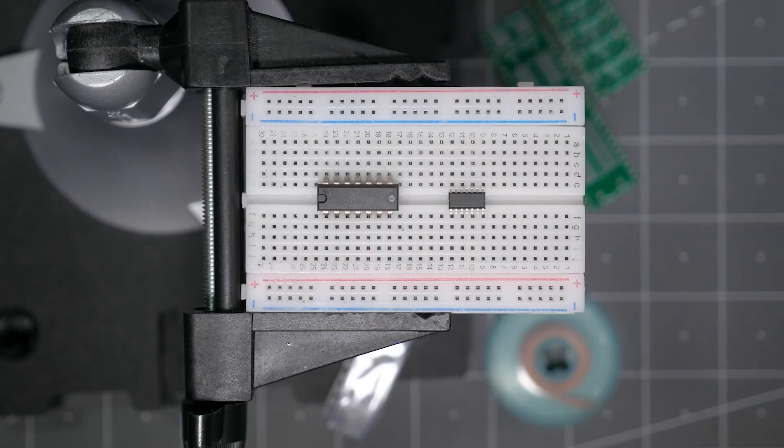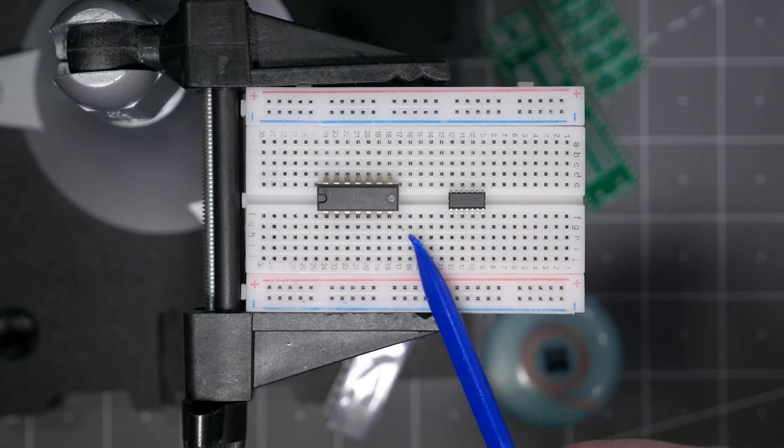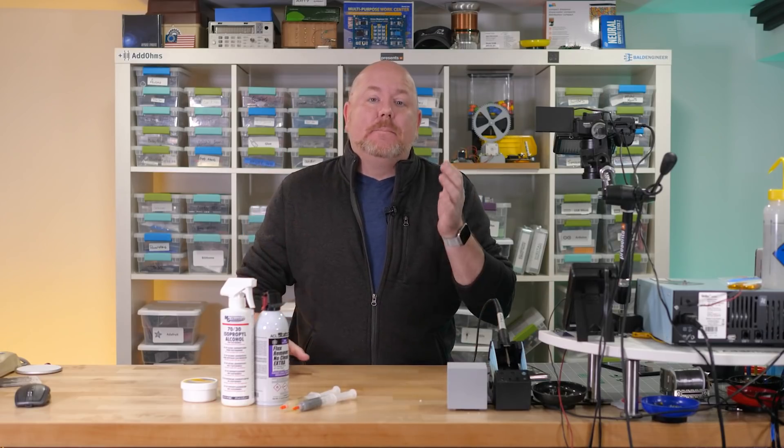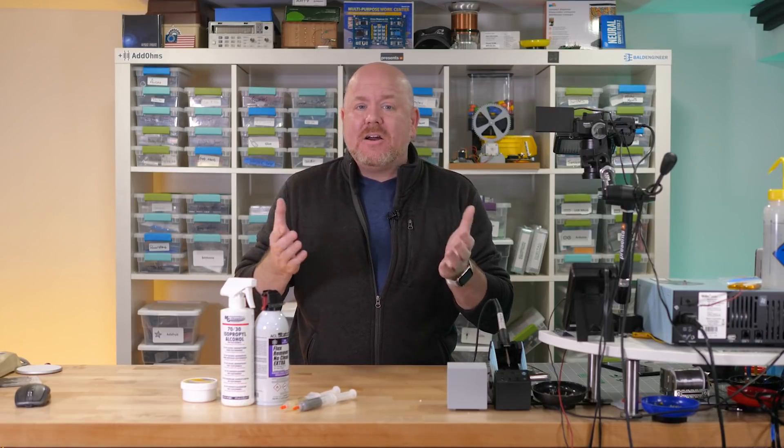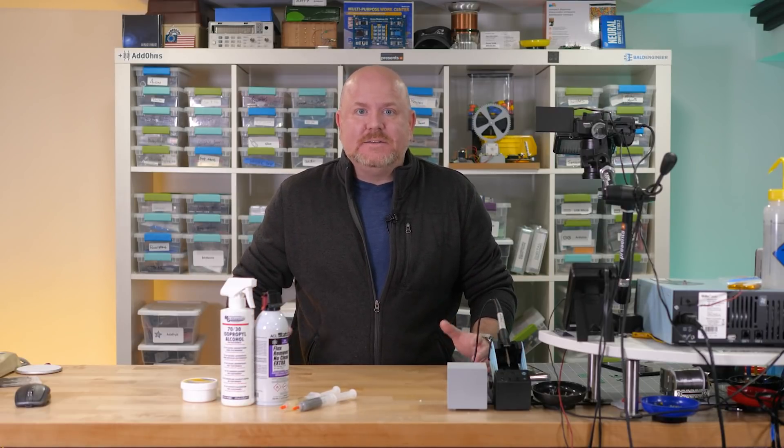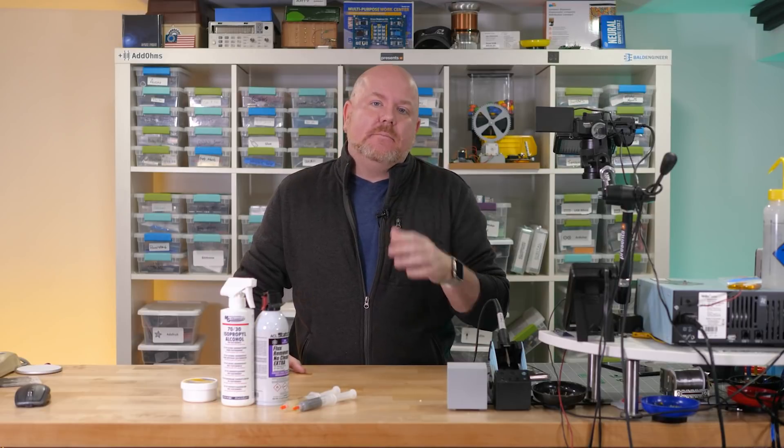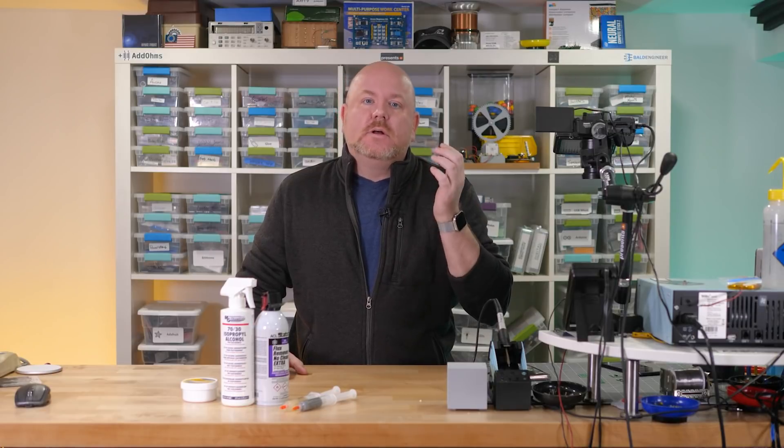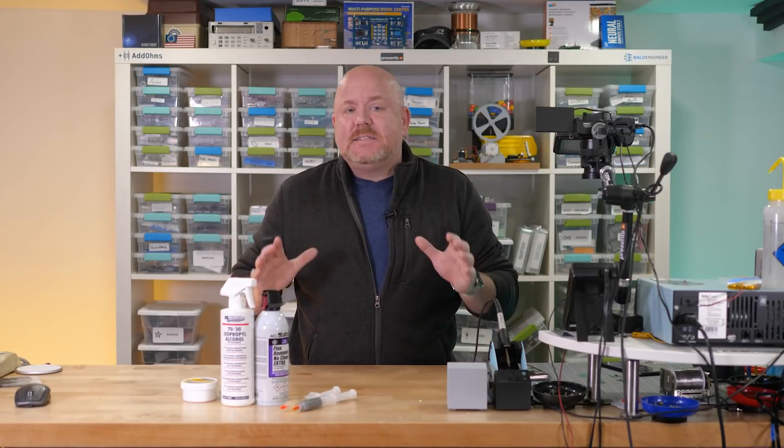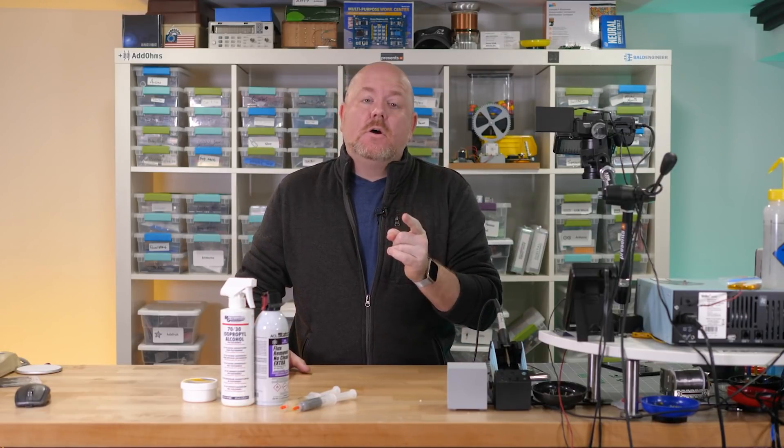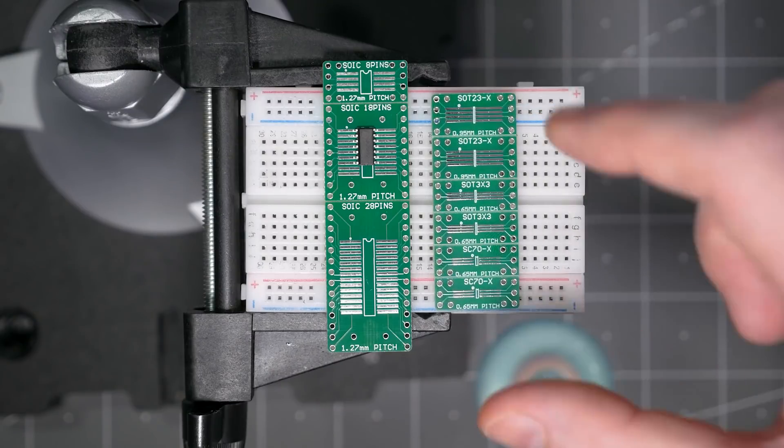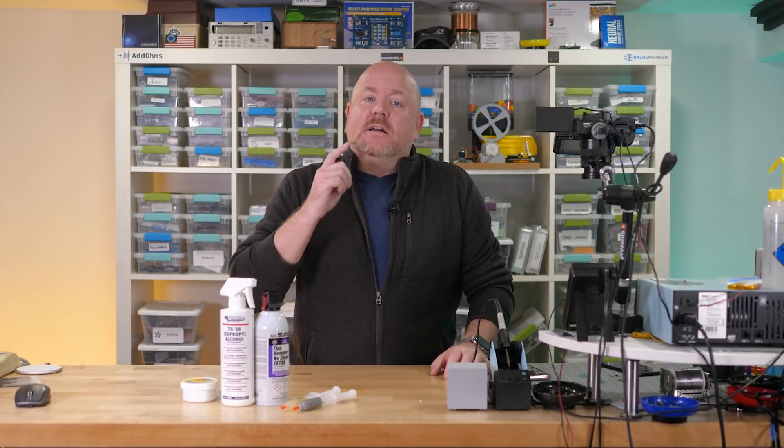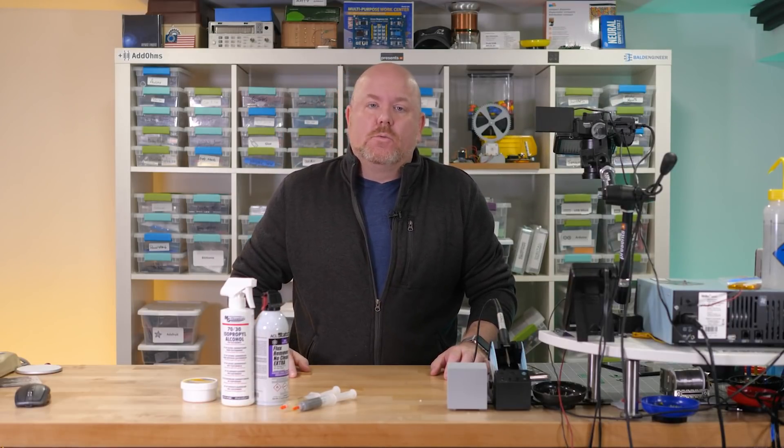As the world moves towards surface mount components, breadboard-friendly through-hole parts are getting hard to find. In fact, when I put together the active components episode, I had a hard time finding through-hole ICs. For that reason, I recommend to start stocking up on SOIC, or surface mount, to through-hole adapters. There are at least two options: design your own, or buy something off the shelf like these SMART boards. Let's use those boards to talk about the consumable supplies to keep on your workbench.